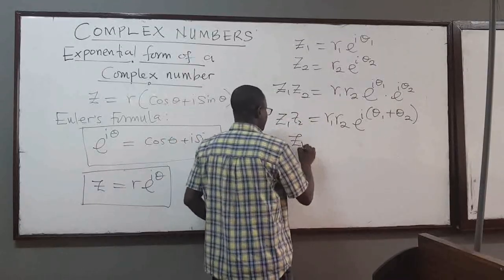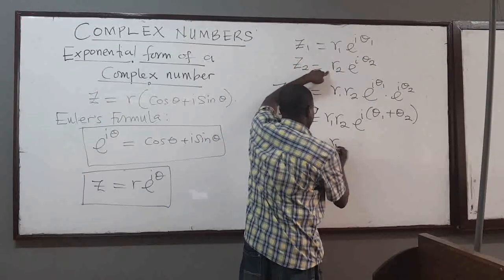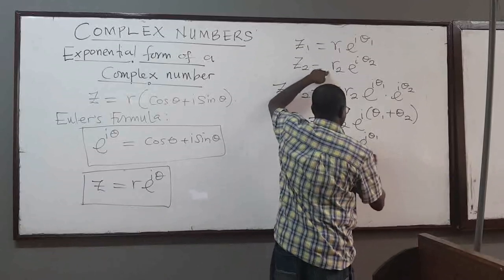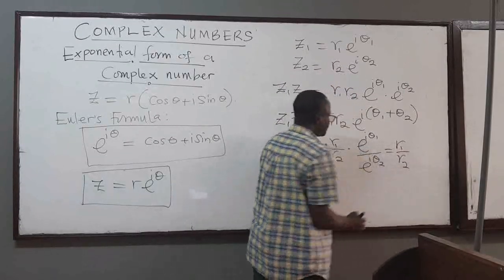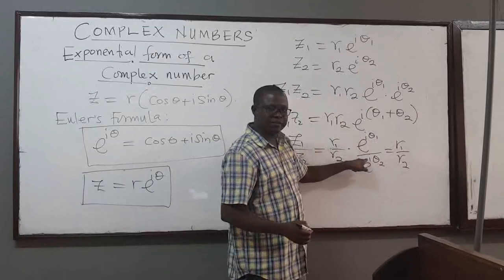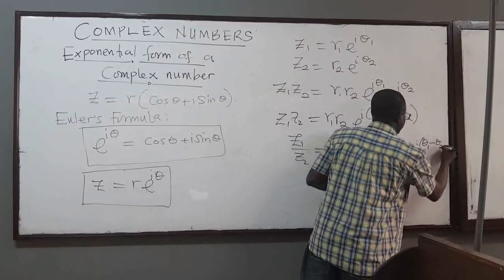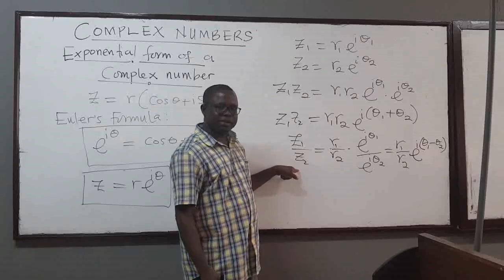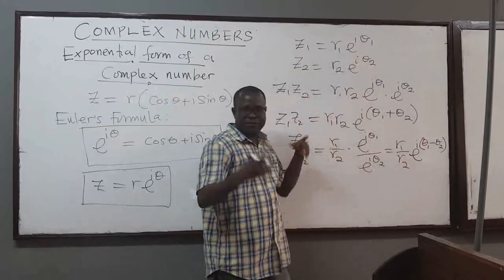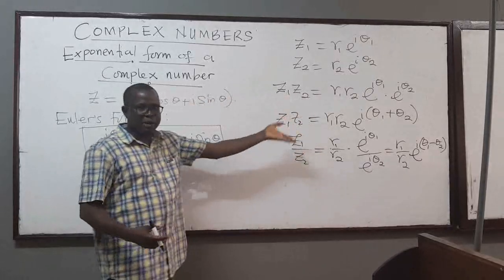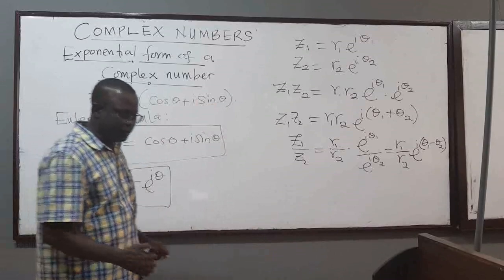In the same way, if you divide them — z1 over z2 — you get r1 over r2, and then e to the i theta1 divided by e to the i theta2. When dividing, you subtract exponents, so this becomes r1 over r2 times e to the i(theta1 minus theta2). That says the resulting argument is the difference of the two arguments — consistent with what we got before, but much easier, without needing to expand and use trig identities.